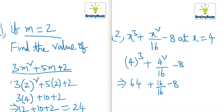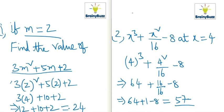Continuing: 64 plus 1 minus 8 equals 65 minus 8, which equals 57. So at x equals 4, the value of x cubed plus x squared by 16 minus 8 is equal to 57.